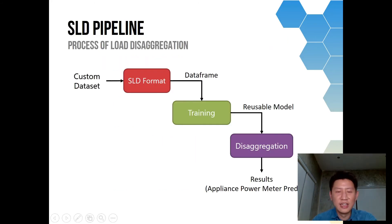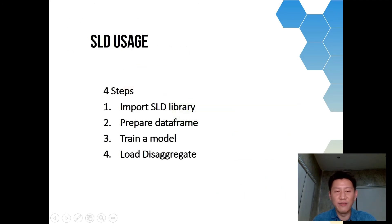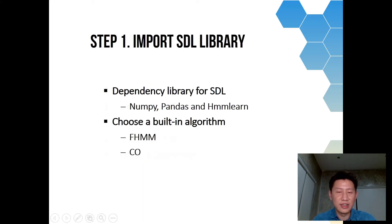As you can see, you have a dataset, you put it into SLD format as a simple data frame, and then you can start training. You get the model, and then you start disaggregation to get results. It's much quicker than NILMTK. There are four steps: import library, prepare data frame, train the model, and then disaggregate your load data.